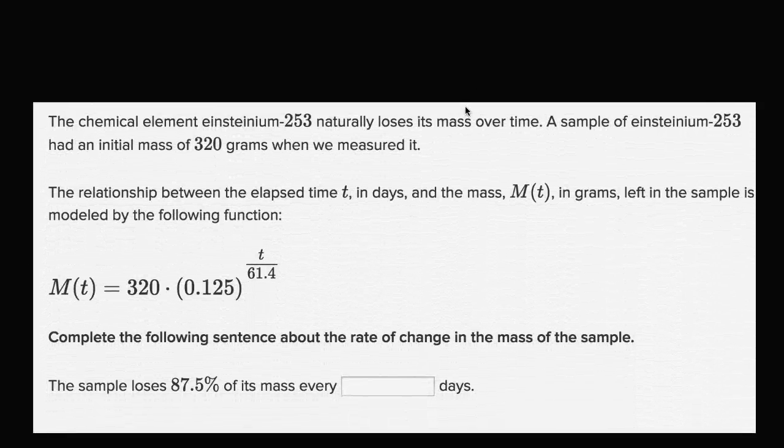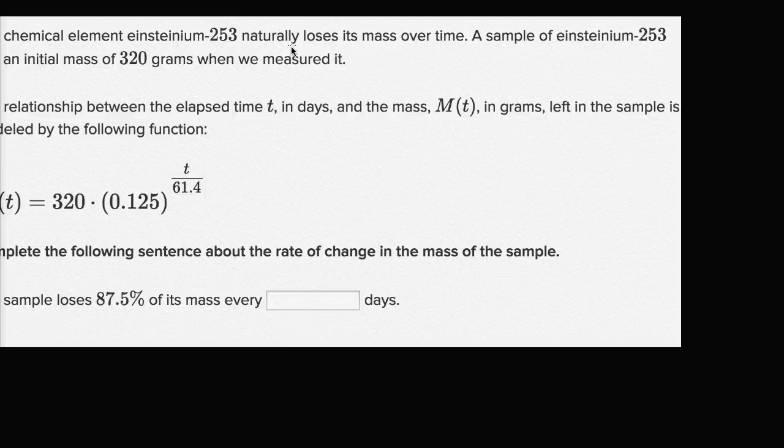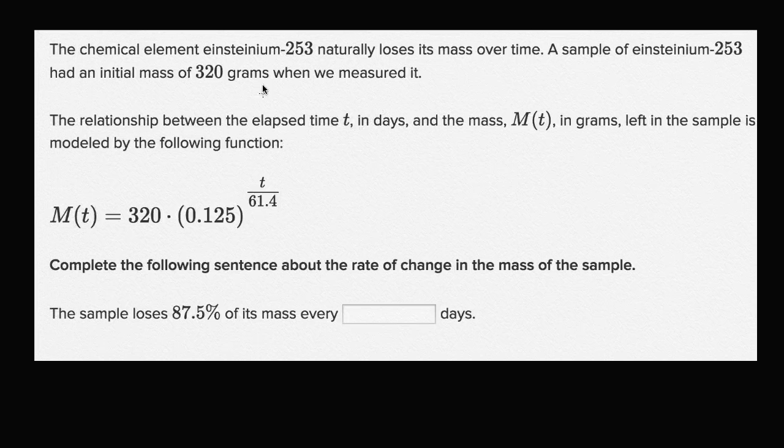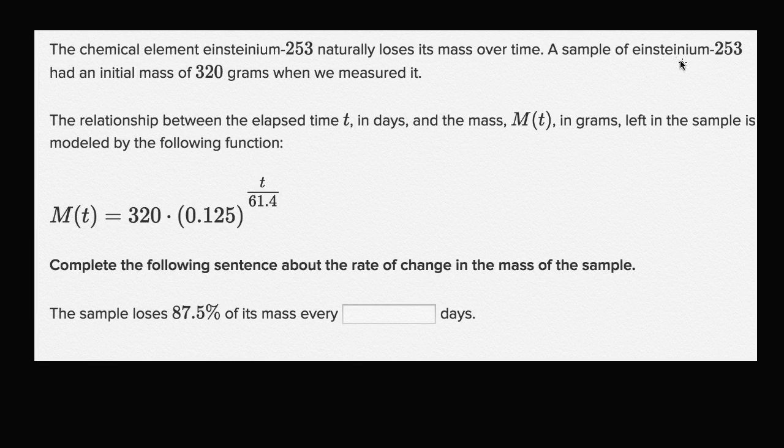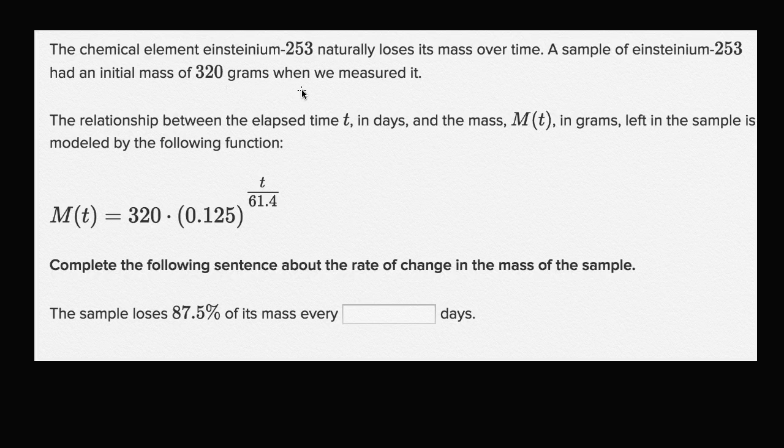Let's do a few more of these. The chemical element Einsteinium-253 naturally loses its mass over time. A sample of Einsteinium-253 had an initial mass of 320 grams when we measured it.